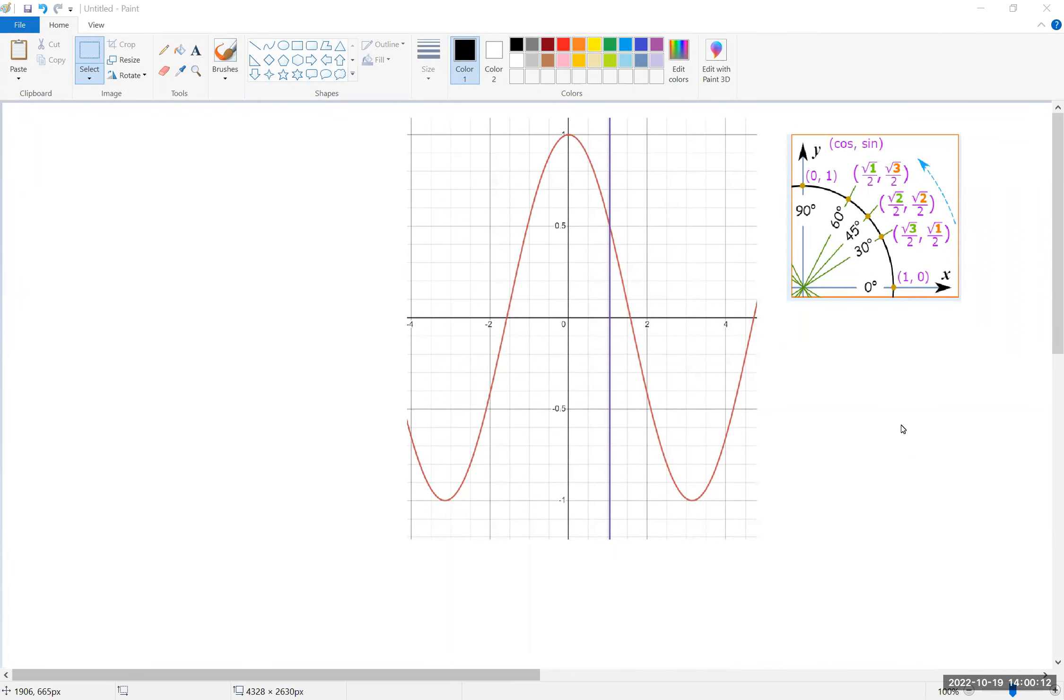All right, we're being asked to use a linearization to estimate cosine of 62 degrees, which is real close to cosine of 60, which is cosine of pi over 3 in radians. So we're going to work off of the cosine function.